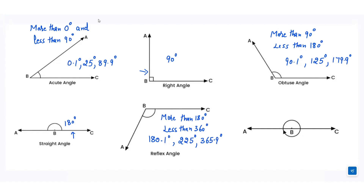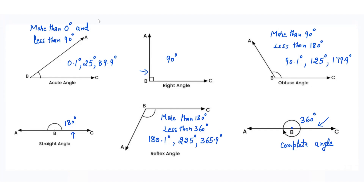The sixth type of angle is called a complete angle. The angle which is equal to 360 degrees is called a complete angle, and we represent this angle like this. If we have a full circle around a point, that full circle is represented by a value of angle equal to 360 degrees.